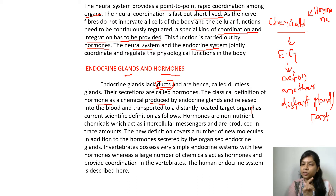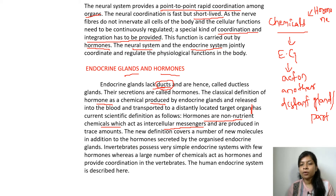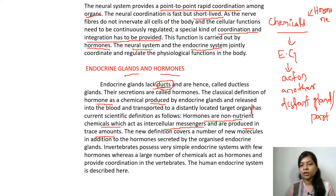In modern science, hormones are defined as non-nutrient chemicals which act as intercellular messengers — messengers that act upon cells — and are produced in trace amounts. This is the new definition, which covers a number of new molecules in addition to hormones secreted by the organized endocrine glands.